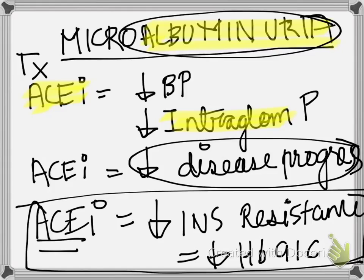When a patient has HbA1c levels greater than 7%, the first step is to advise lifestyle changes — counseling and diet modification and exercise. Especially when HbA1c is less than 7%, you don't want to start them on medication right away. It is very easy to confuse the two issues of albuminuria and HbA1c, but remember HbA1c does make the condition worse, though it doesn't have a very direct correlation.